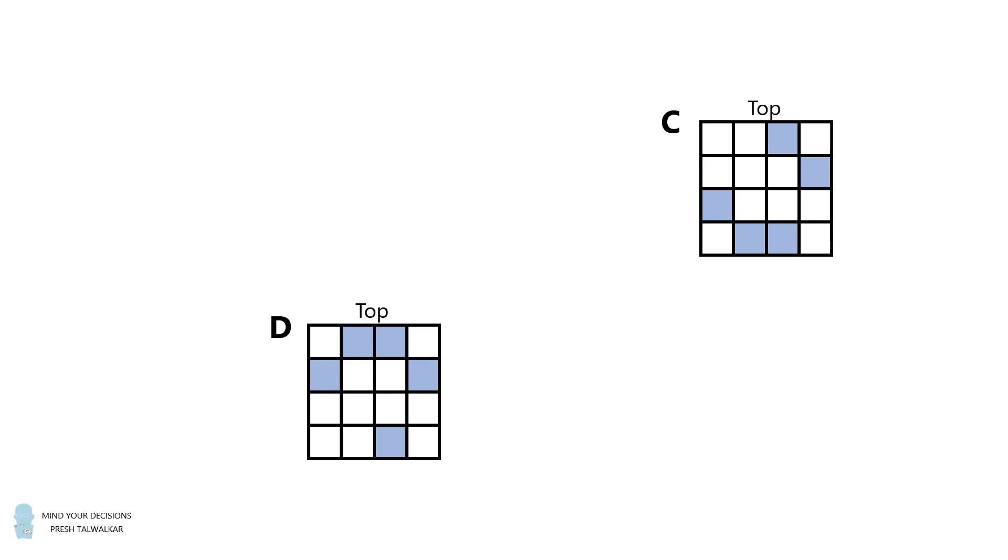What about grid D? Again, grid C differs by two squares from grid D, so D cannot be the answer.